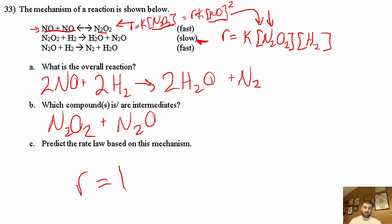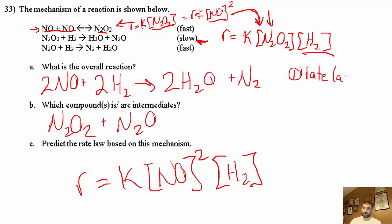So I end up with rate equals K times NO squared times concentration of H2. That's it. First step: rate laws. Second step: replace intermediates. Third step: write out the answer, simplify and combine like terms. Hope you found that helpful, see you in class.